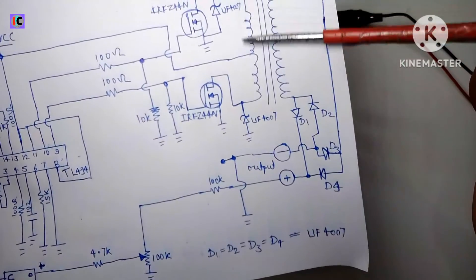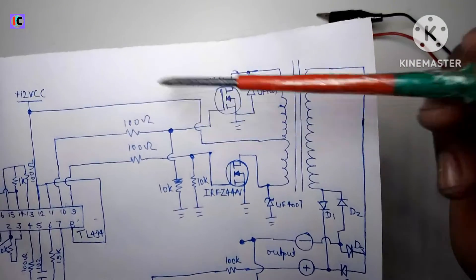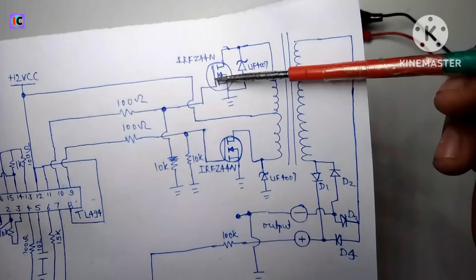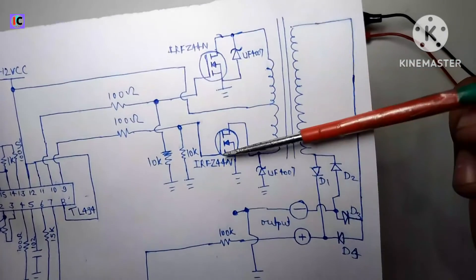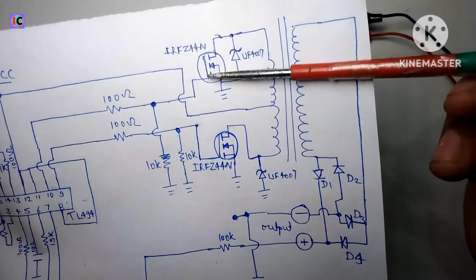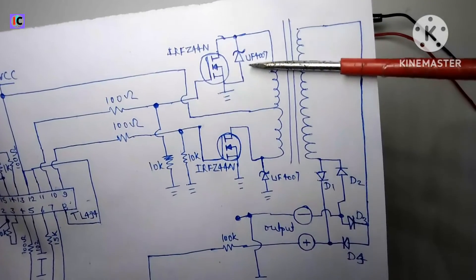And also the transformer which is a center tap will connect to the 12 volt input and the side-by-side coils are connected through the MOSFETs drain pins. And for protecting from high voltage spike for the MOSFET, here we use